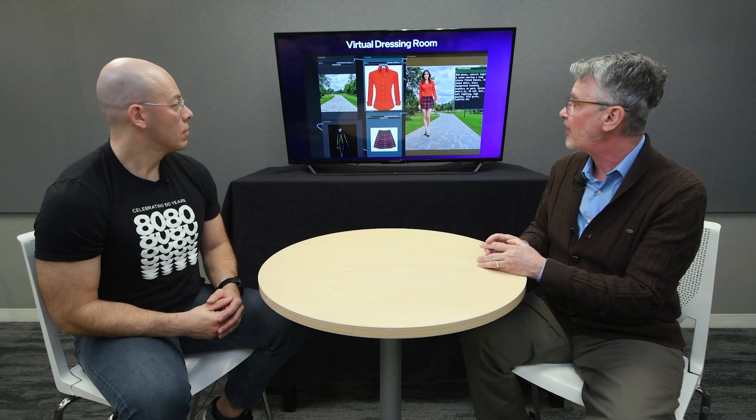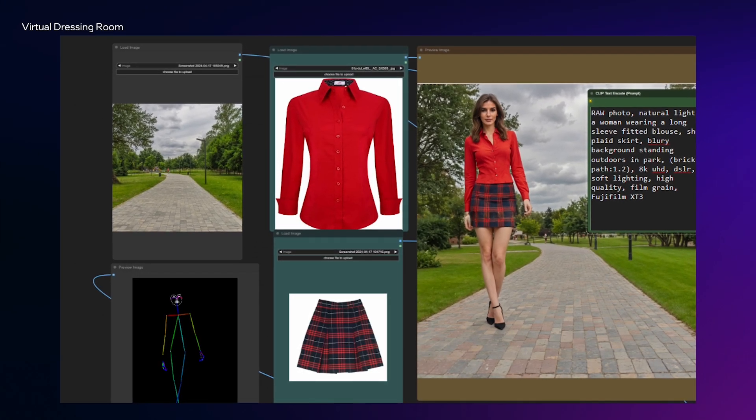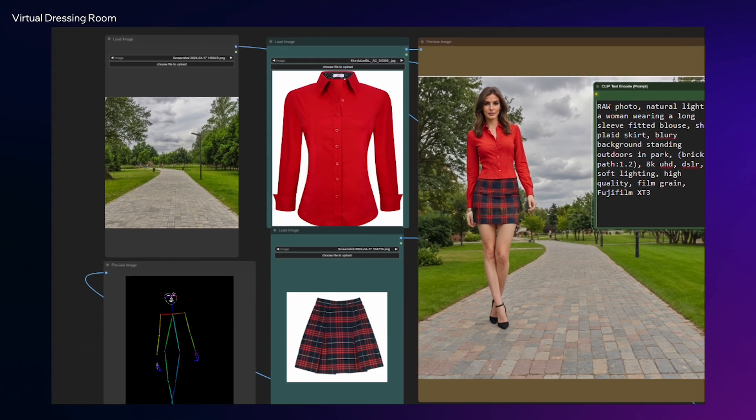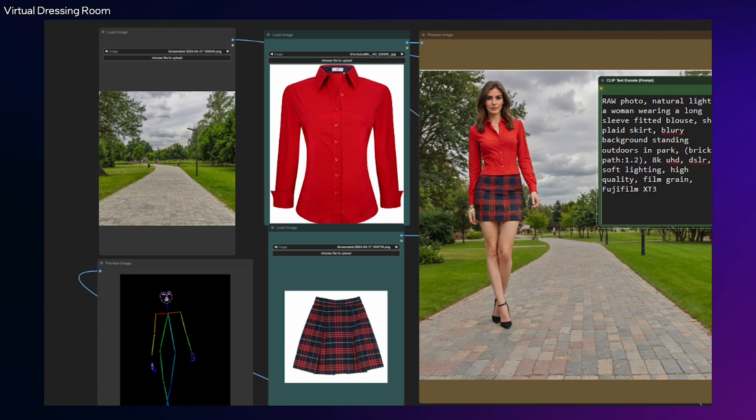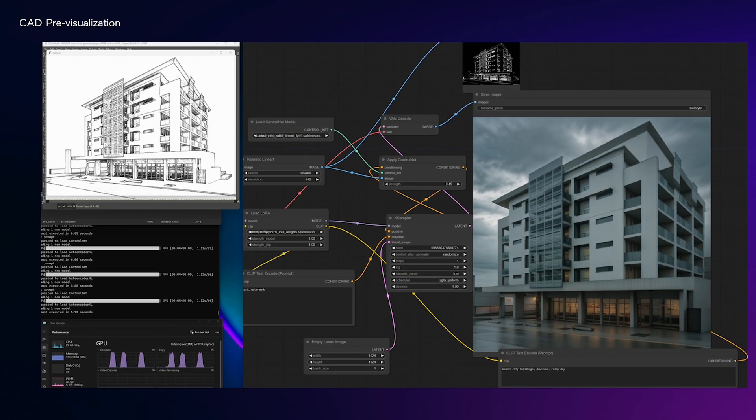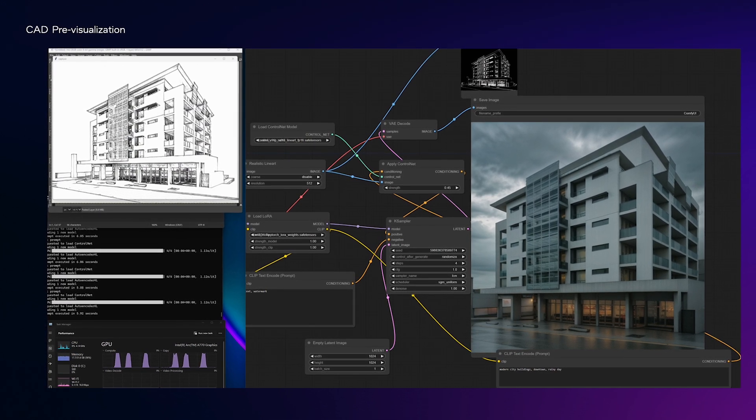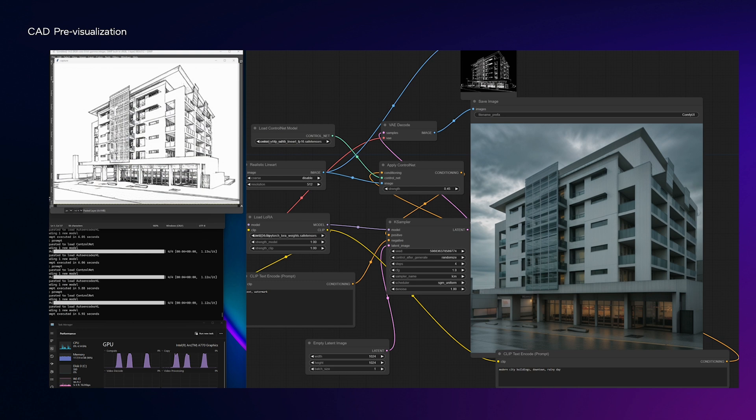ComfyUI is a very popular tool, and it has something called workflows. Here's an example: a virtual dressing room where you take a background image, a pose, and garments, and assemble them just by describing what you want — great for someone building an e-commerce site. Another example is CAD pre-visualization, where ComfyUI takes simple diagrams, sketches, or wireframes and turns them into photographic images for architectural pre-visualization. The new thing is we've got ComfyUI integrated in AI Playground 2.0, so you can run workflows like that directly within AI Playground.